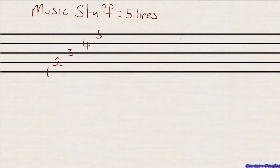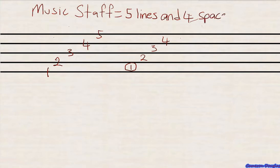In between the lines we have what we call spaces. Again, the first space is at the bottom, in between the lines. Let's see how many spaces we have: we have one, second space, third, and fourth. So we have the five lines of the music staff and we now have four spaces. So these are the two parts that make up the music staff: we have five lines — the first line starts from the bottom — and we have four spaces, with the first space at the bottom.